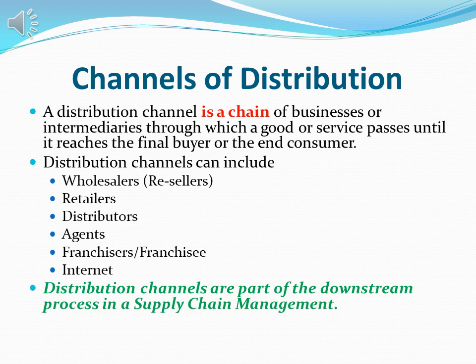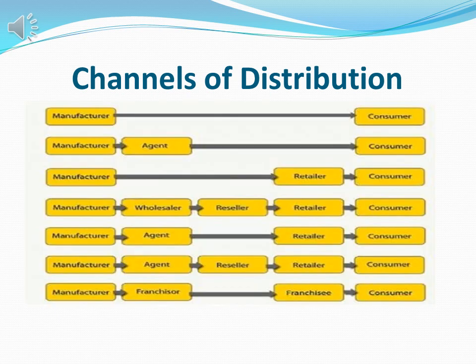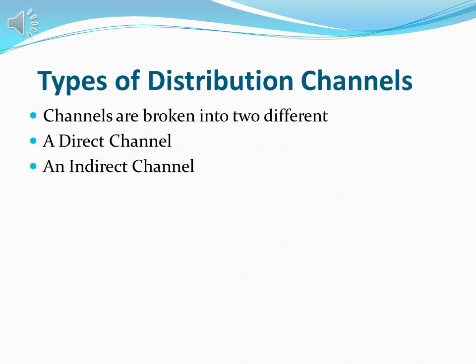Distribution channels are part of the downstream process in supply chain management, starting from the manufacturer to the end customer. Some channel models include: manufacturer to direct consumer; manufacturer, agent, consumer; manufacturer, retailer, consumer; manufacturer, wholesaler, reseller, retailer, consumer; manufacturer, agent, retailer, consumer; manufacturer, agent, reseller, retailer, consumer; and manufacturer, franchisor, franchisee, consumer.